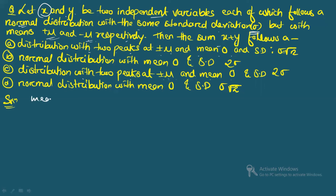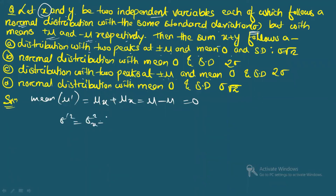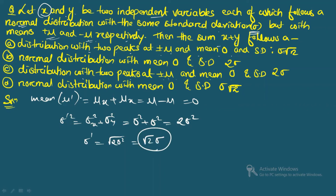Calculate the mean: μ′ = mean(x) + mean(y) = μ + (−μ) = 0. For variance: σ′² = σ²_x + σ²_y = σ² + σ² = 2σ². Therefore σ′ = √(2σ²) = √2 · σ. So x + y follows a normal distribution with mean 0 and standard deviation √2 · σ. The correct answer is option D.